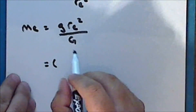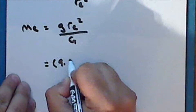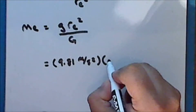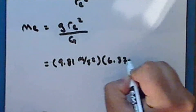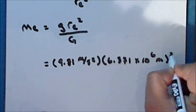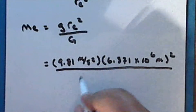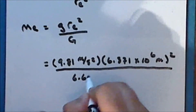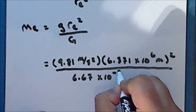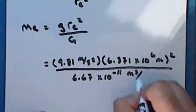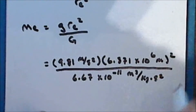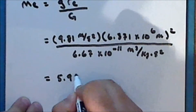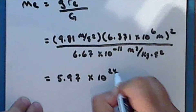To three significant figures, the acceleration due to gravity near the surface of the Earth is 9.81 meters per second squared. The radius of the Earth we just calculated as 6,371 times 10 to the sixth meters. The universal gravitational constant to three significant figures is 6.67 times 10 to the negative 11th power meters cubed over kilogram per second squared. This gives, to three significant figures, 5.97 times 10 to the 24th kilograms.